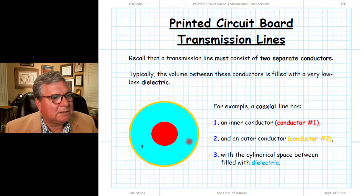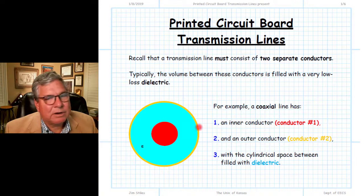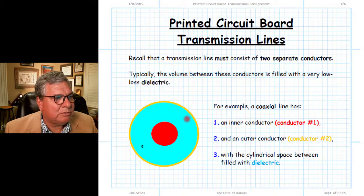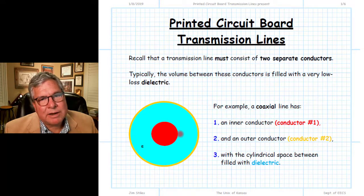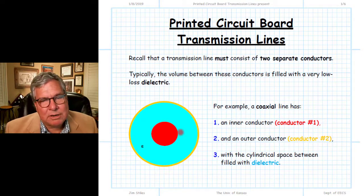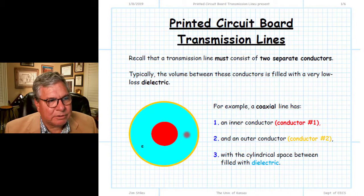For coax, the inner conductor is shown in red, the outer conductor — the conducting metal — is in gold, and the dielectric material is in blue. I do this because I'm going to show some other types of transmission lines now, and they'll use the same color coding with respect to the two conductors and the dielectric.